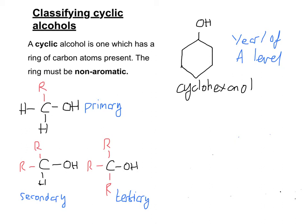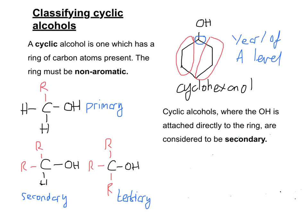So when we're looking at a cyclic alcohol, what we need to do is look at the fact that the ring can actually be considered as two separate sections coming off the carbon that the OH group is attached to. Therefore, we consider them to be secondary.